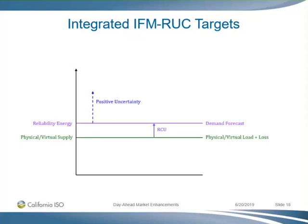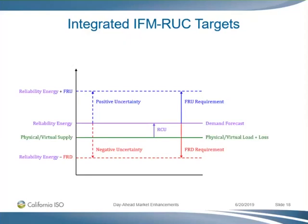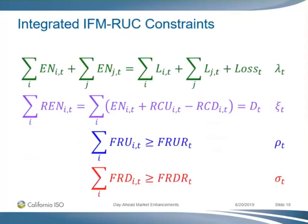Reliability capacity can also go in the opposite direction as reliability capacity down. The flexible ramp product covers uncertainty — we measure positive uncertainty from the demand forecast in the day-ahead market, met by the reliability energy, to bridge the difference between the demand forecast in the day-ahead market and the demand forecast in the 15-minute market. That gives us the flexible ramp-up target. Similarly, negative uncertainty covers the downward direction. So it's a little different from the sequential: one additional target, one additional equation — the power balance equation for reliability energy schedules, which I call REN.